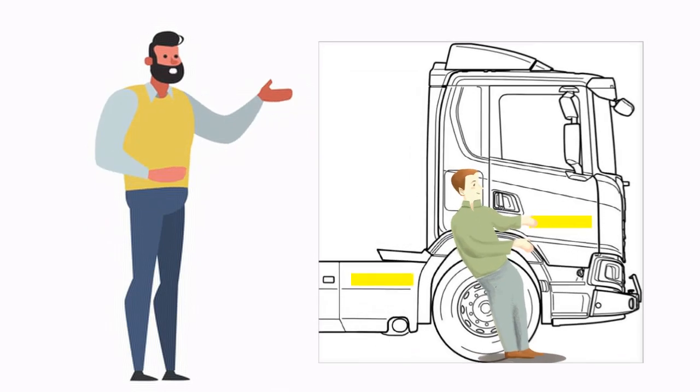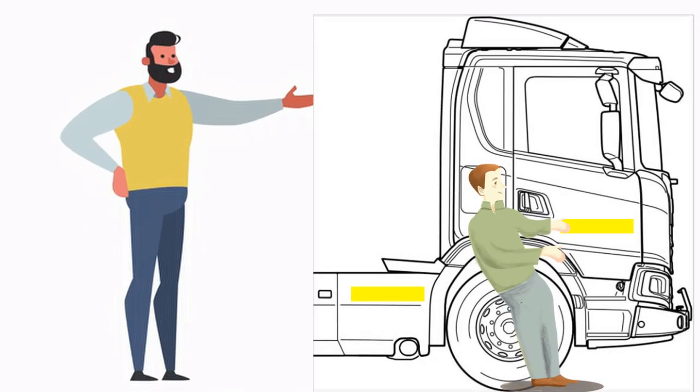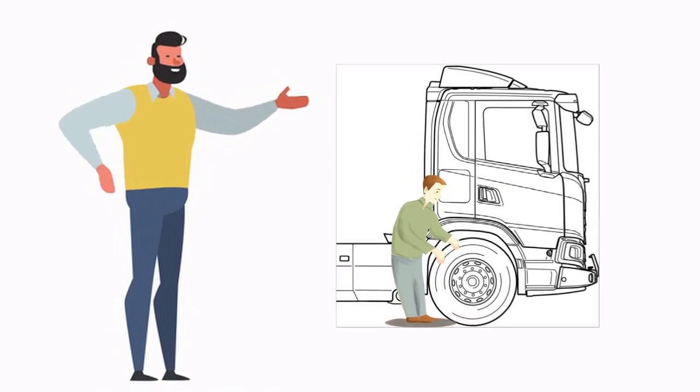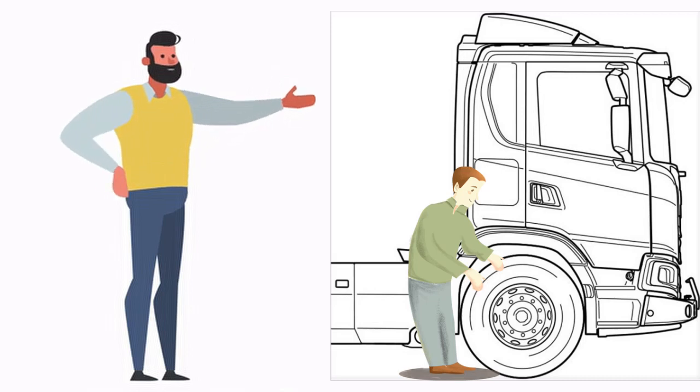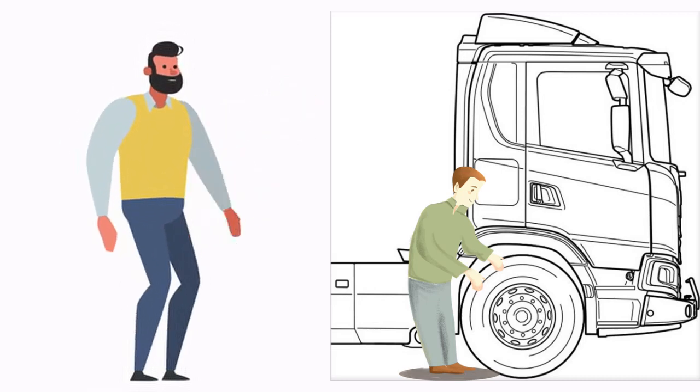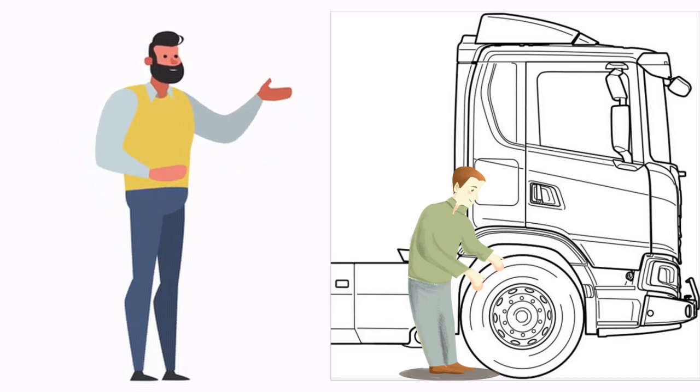You will start with the right side reflectors and reflecting tape. Mention that it is clean and intact. Then the right front wheel, check if the tire tread and pressure are fine. Mention that there is no damage on the side of the tire, the valve is closed, and that the nuts are fastened and there are no leaks.